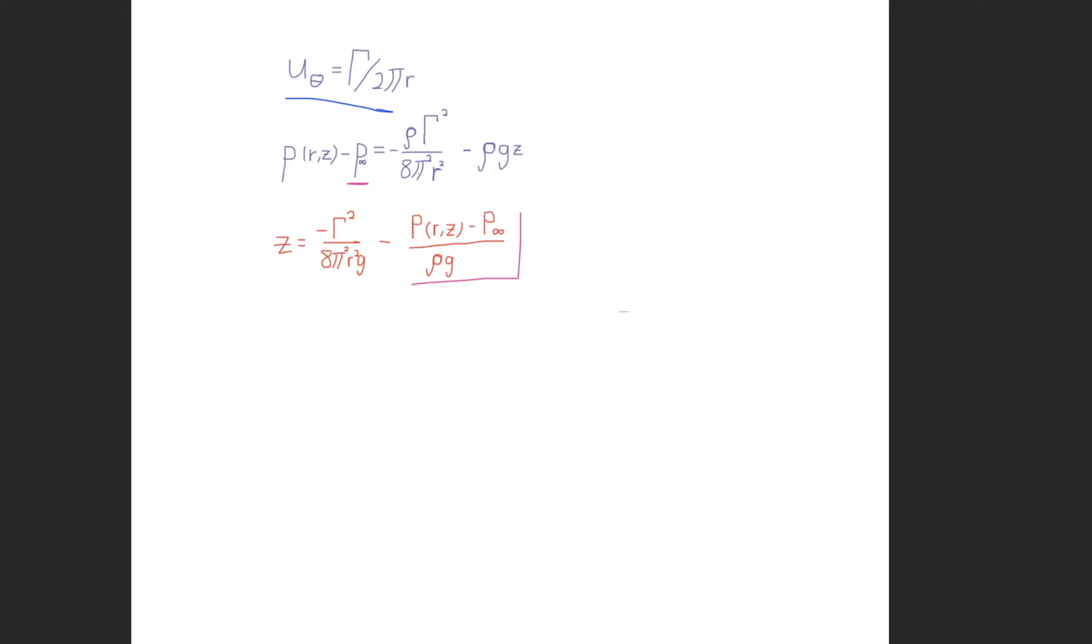So we end up with a function of our circulation squared over 8 pi squared r squared g minus these pressure components again over rho g, right?